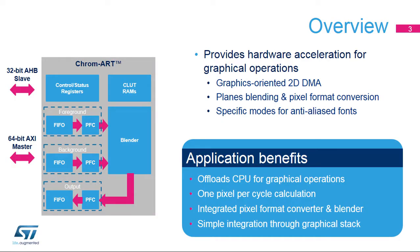The Chrom-ART Accelerator offers true hardware acceleration for graphical operations. It is built around a 2D DMA engine for fast data copy with specific functions to support pixel format conversion, as well as blending operations between two planes.